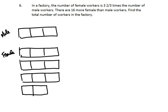We know that there are 16 more female workers than male workers. Since the bottom portion represents the number of females that are more than the males, that has to equal 16. And since there are eight equal rectangles in there, each of those should be worth two, so that there are 16 more female than male.